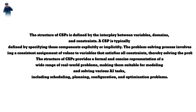The structure of CSPs is defined by the interplay between variables, domains, and constraints. A CSP is typically defined by specifying these components explicitly or implicitly. The problem-solving process involves finding a consistent assignment of values to variables that satisfies all constraints, thereby solving the problem. The structure of CSPs provides a formal and concise representation of a wide range of real-world problems, making them suitable for modeling and solving various AI tasks, including scheduling, planning, configuration, and optimization problems.